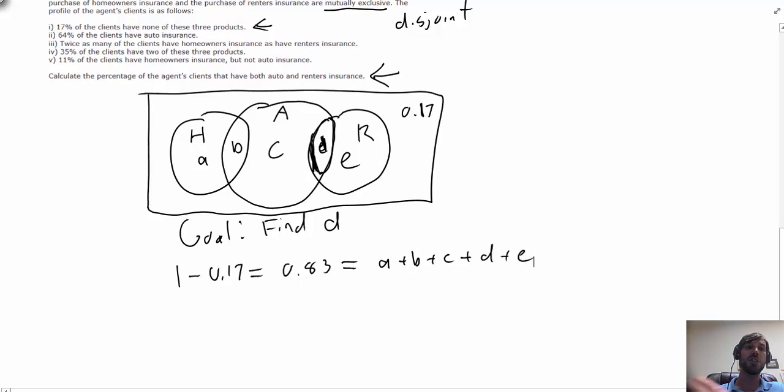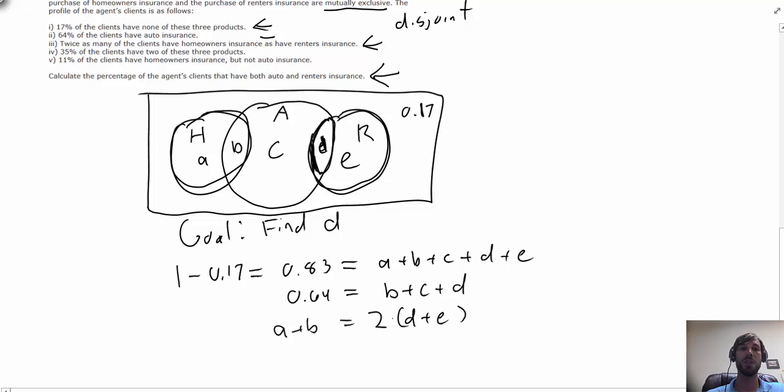Now the second condition here focuses on auto only, and in my Venn diagram auto makes up B, C, and D. The third condition says that the homeowners circle should be twice as large as the renters circle. Homeowners over here combine A and B, whereas renters combine D and E, and my condition is that A plus B should be twice D plus E.